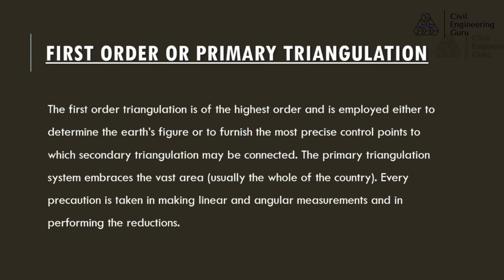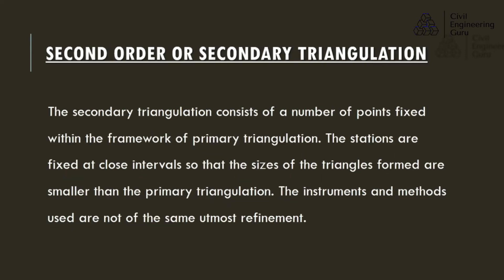First order or primary triangulation: the first order triangulation is of the highest order and is employed either to determine the earth's figure or to furnish the most precise control points to which secondary triangulation may be connected. The primary triangulation system embraces a vast area, usually the whole of the country. Every precaution is taken in making linear and angular measurements and in performing the reductions.